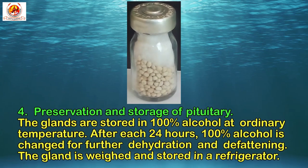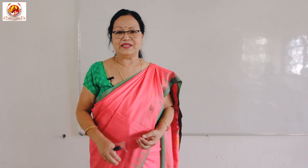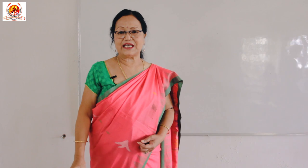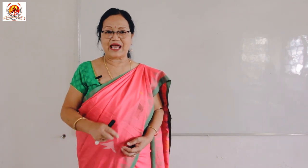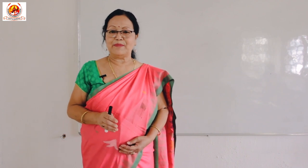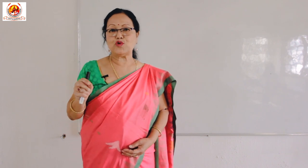Now let us come to the preservation and storage of the pituitary gland. The gland is stored in 100% alcohol at ordinary temperature. After each 24 hours, 100% alcohol is changed for further dehydration and defattening. The dried gland is stored in a refrigerator. The glands may be stored inside a desiccator containing anhydrous calcium chloride, and the desiccator may be kept inside a refrigerator. The gland may also be preserved in glycerin; the composition is 3 ml glycerin plus 1 ml water plus 2 ml glycerin.